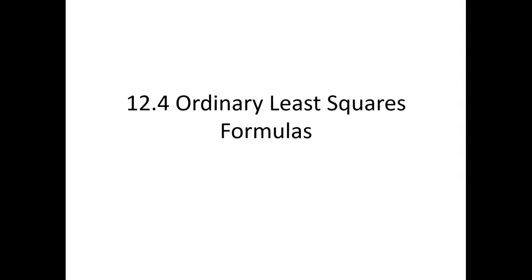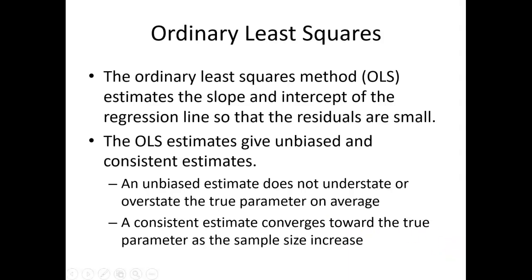Now we're going to work on some of the statistics behind those parameter estimates. These are called the ordinary least squares formulas. Ordinary least squares is the method that we use to estimate the slope and intercept parameters. Ordinary least squares gives unbiased and consistent estimates, and these are two terms that we introduced in the earlier part of the course.